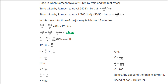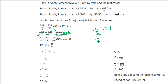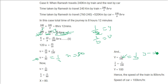Solving the two equations using substitution U equals 1/X and V equals 1/Y, we get U equals 1/80 and V equals 1/100. Therefore X equals 80 and Y equals 100. The speed of the train is 80 km/hr and the speed of the car is 100 km/hr.